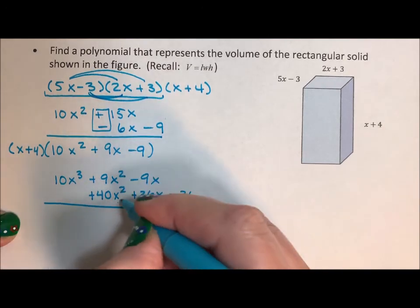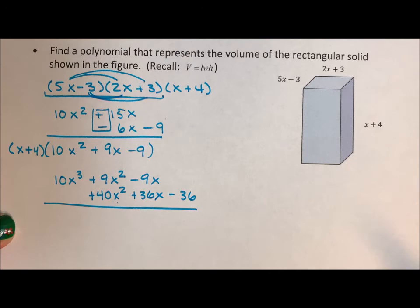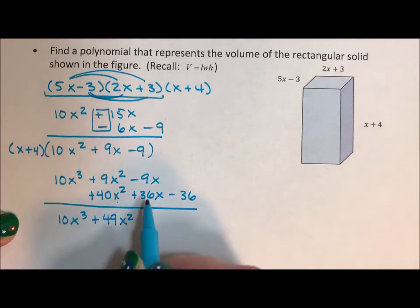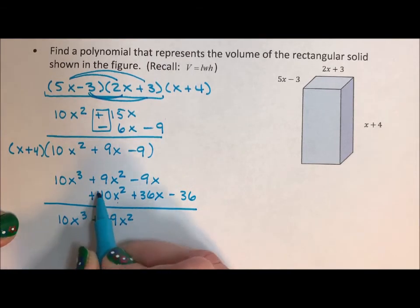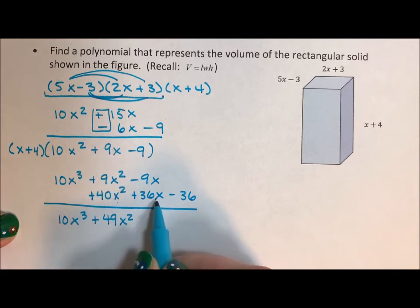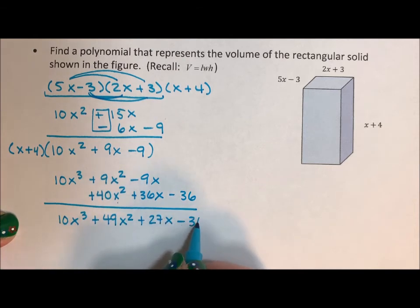I've lined up my like terms. I can add down. 10x cubed plus 49x squared. Same sign, add. Different signs, subtract. 36 minus 9 is 27x minus 36.